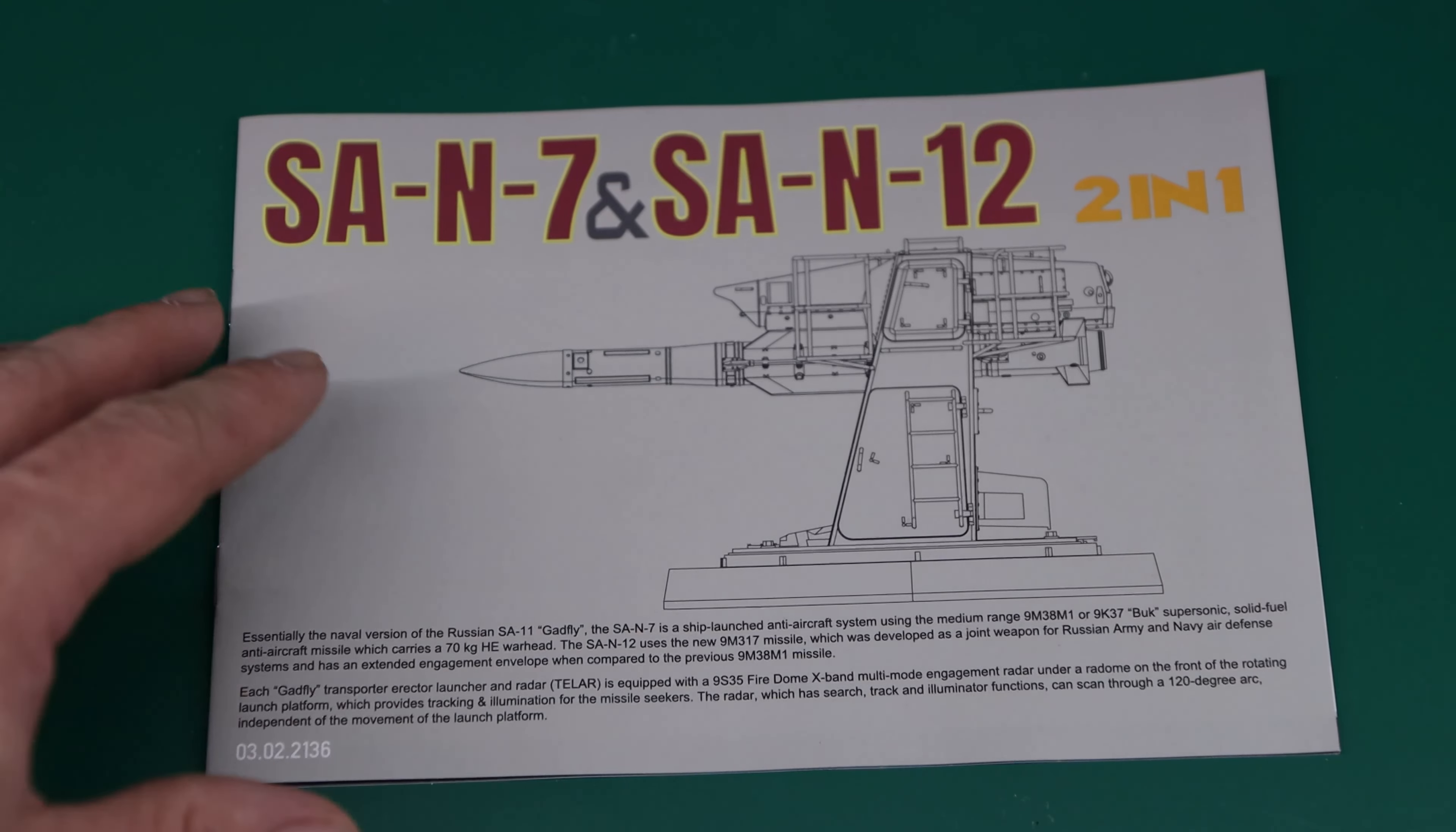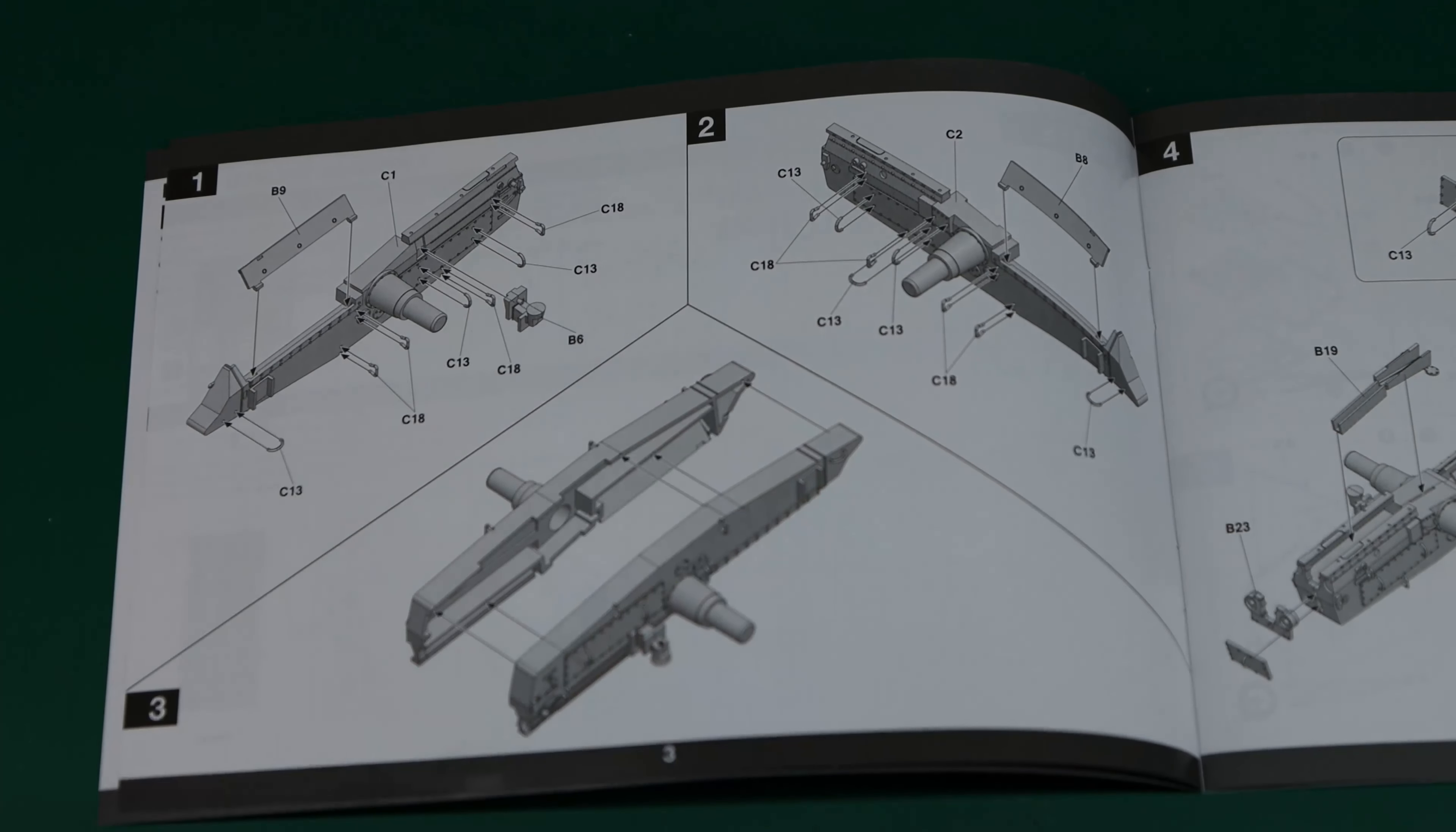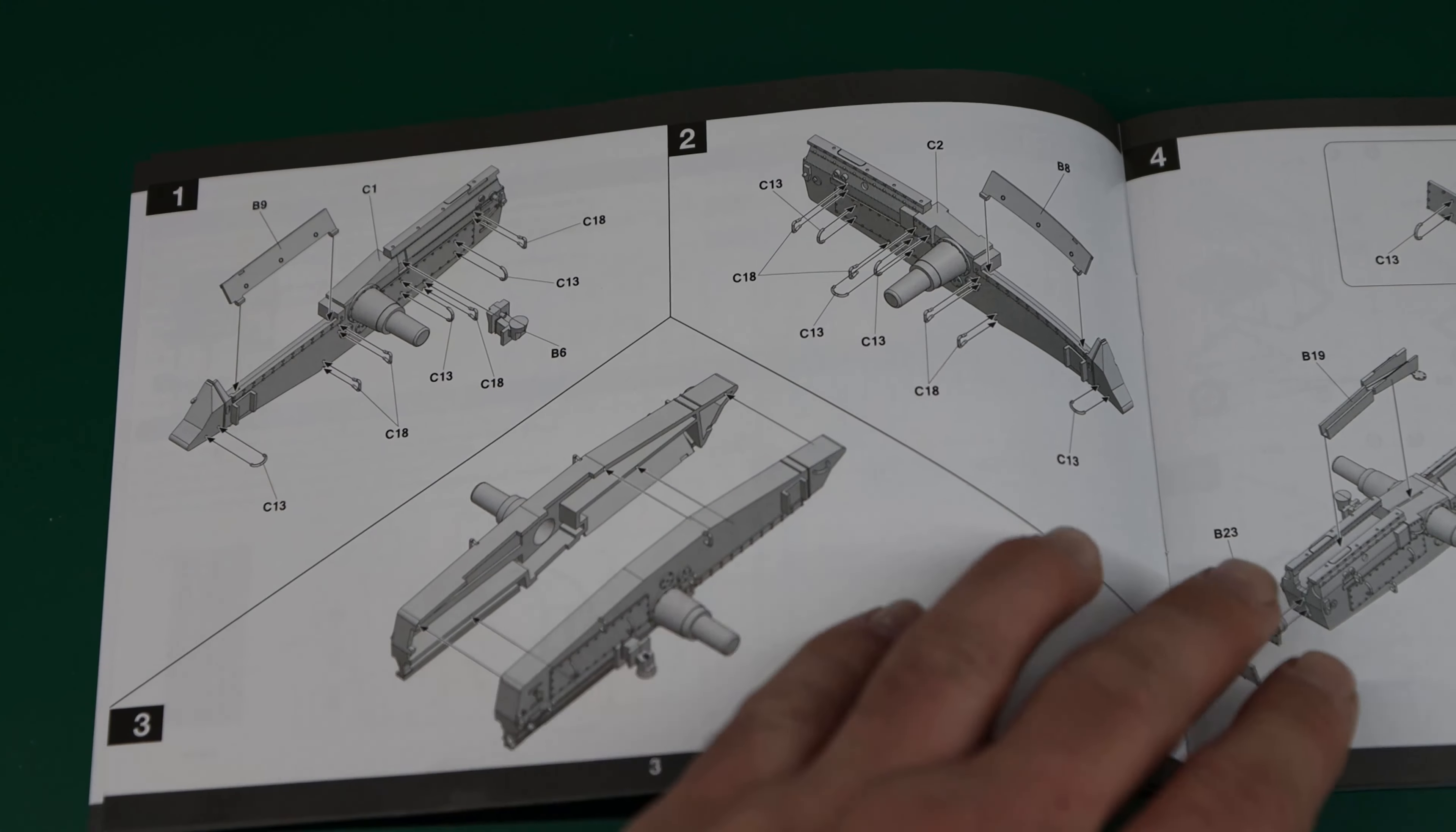Alright, lastly we'll look at the instruction manual. So again it's the SA-N7 and SA-N12, a two-in-one kit. It's a small format instruction manual. We open it to the first page and they include a sprue map with everything as usual for TACOM. Then step one, we immediately start in on the assembly for the missile holder adding some hand grabs and a few various pieces. Step two is basically the same thing on the other side. Step three, we fit those three halves together.